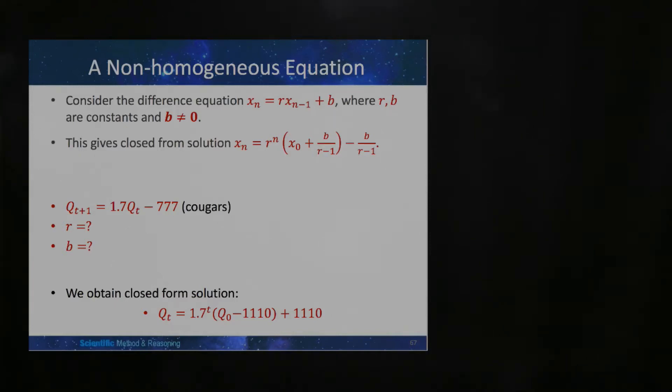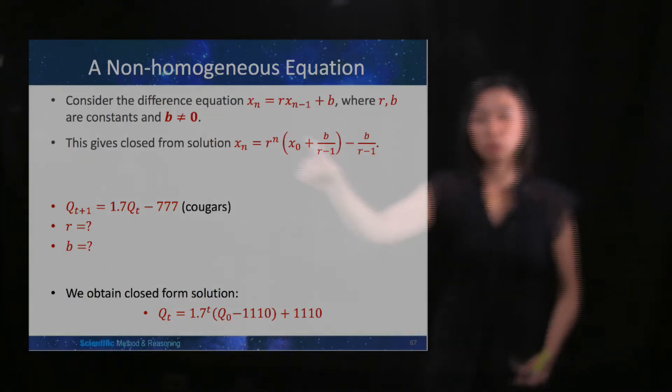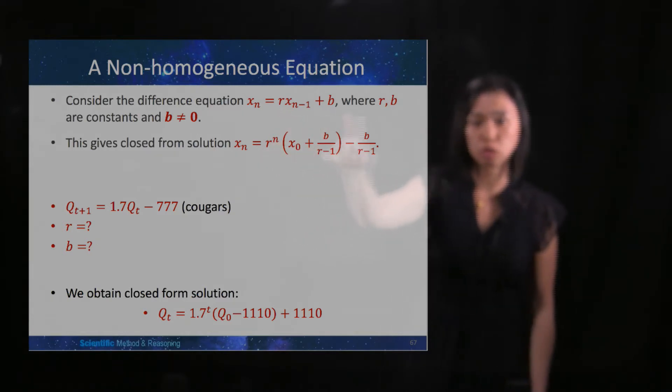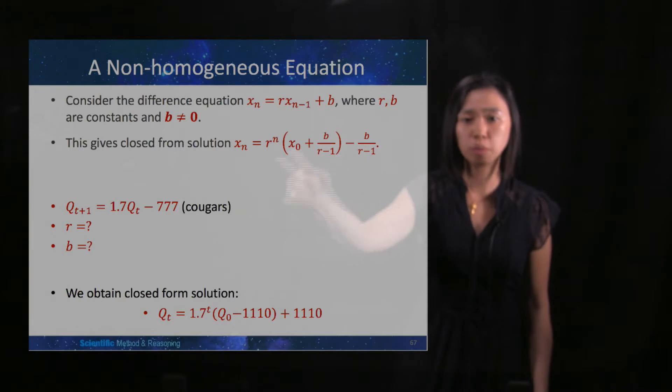In the previous videos, we learned that for first-order linear non-homogeneous difference equations where r is not 1 and b is non-zero, we'll have a closed-form solution, this one.